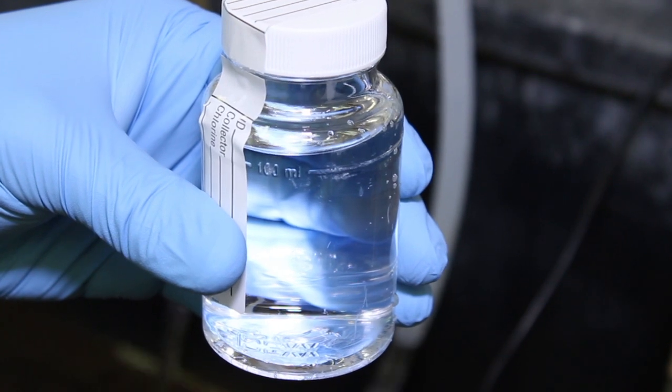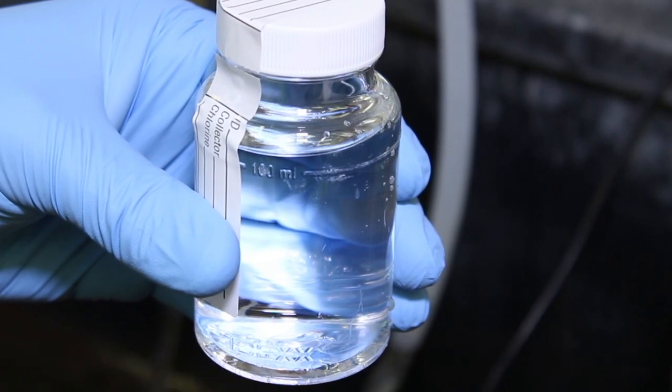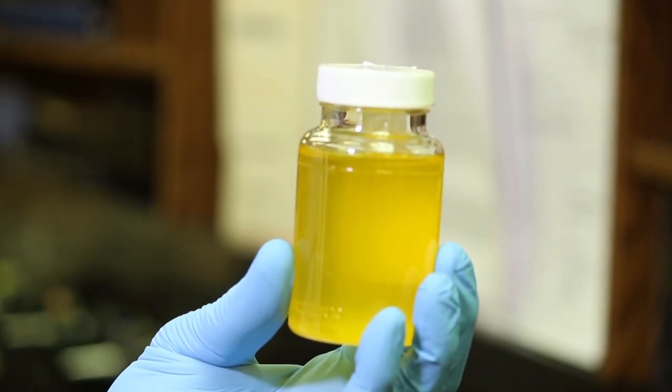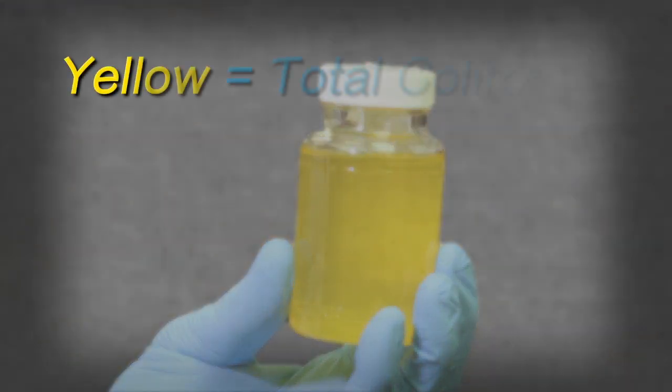If a sample vial's contents are colorless, the test is negative for total coliforms. If a yellow color is evident, the sample is positive for total coliforms.